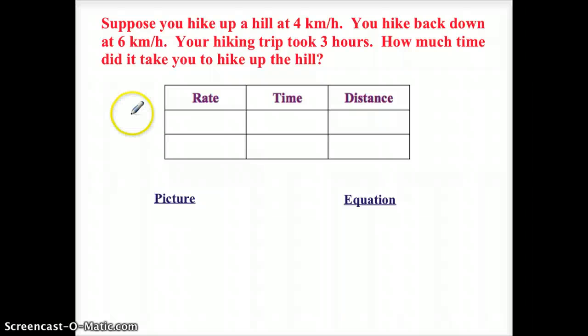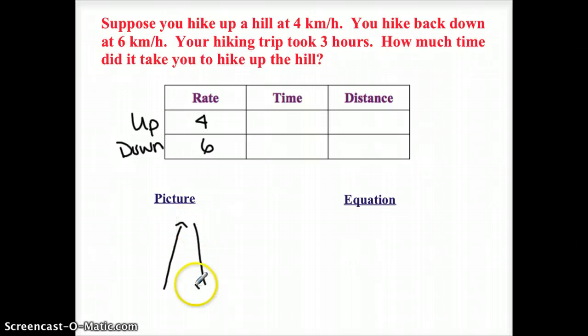So here it is. Suppose you hike up a hill. I'm comparing up a hill and down a hill. You hike up a hill at 4 kilometers. You hike down at 6 kilometers. Okay. So up the hill, down the hill. Oh, look. You're going up the hill and down the same hill. So it looks like once again, our distances are going to be equal.